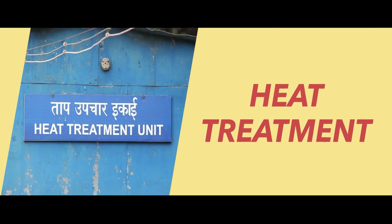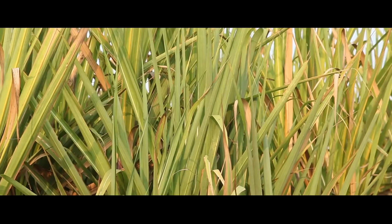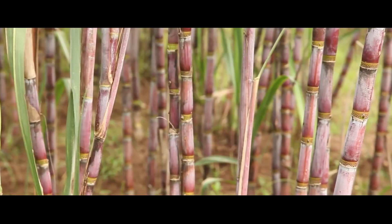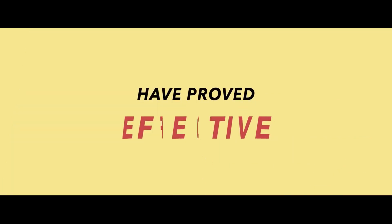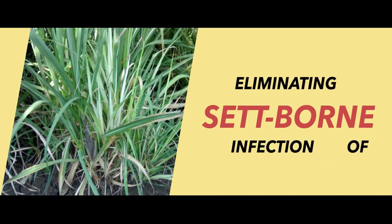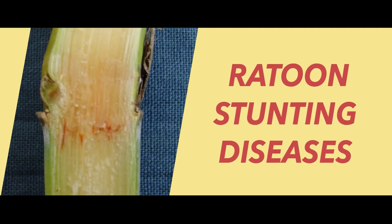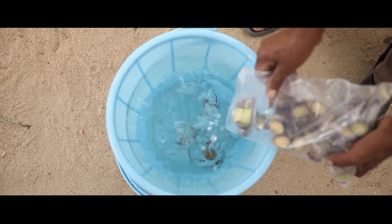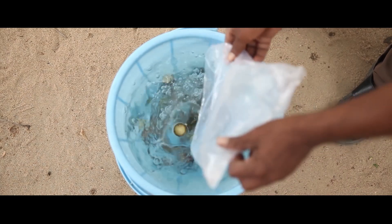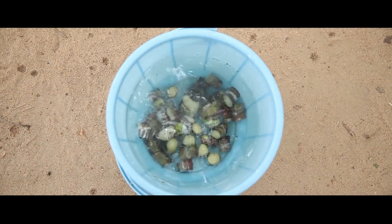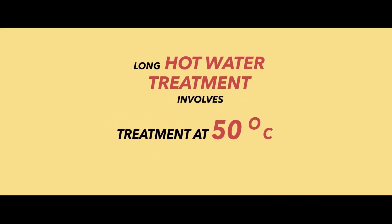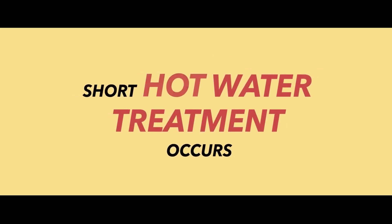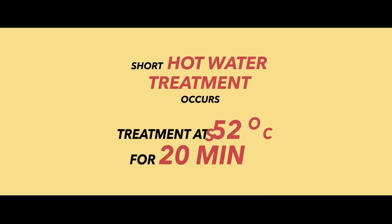Heat therapy involves heat treatment at a temperature that kills set-borne pathogens and impairs their vital functions while causing no detriment to the sugarcane. Hot water, moist hot air, and aerated steam treatments have proved effective in eliminating set-borne infection of grassy shoot and ratoon-stunting diseases. Hot water treatment consists of immersing sets in tanks containing hot water and treating them at a particular temperature for a specified duration. Two types are currently used: the long hot water treatment at 50 degrees centigrade for 2 hours, and the short hot water treatment at 52 degrees centigrade for 20 minutes.